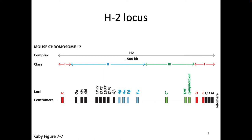One thing you can notice: when I told you about the human genes, the human class 1s — A, B, and C — have one letter, and I remember DP, DQ, DR because they have two letters. In mouse, the class 1s also have one letter: K, D, or L. And the class 2s also have two letters: IA or IE. So that mnemonic holds up for both species.